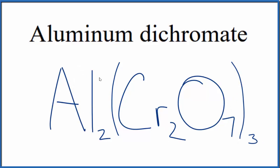So this is the formula for aluminum dichromate, Al2(Cr2O7)3.